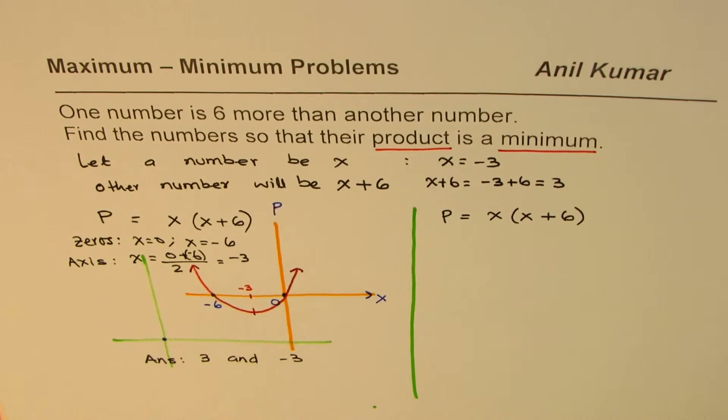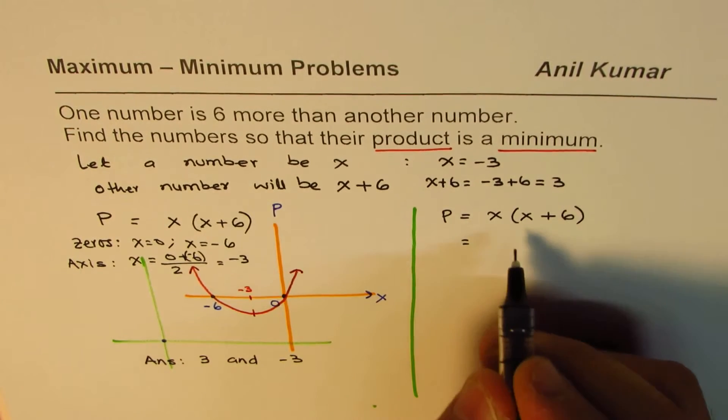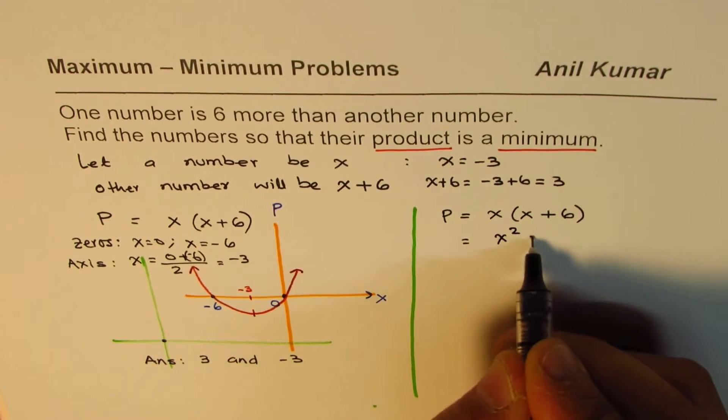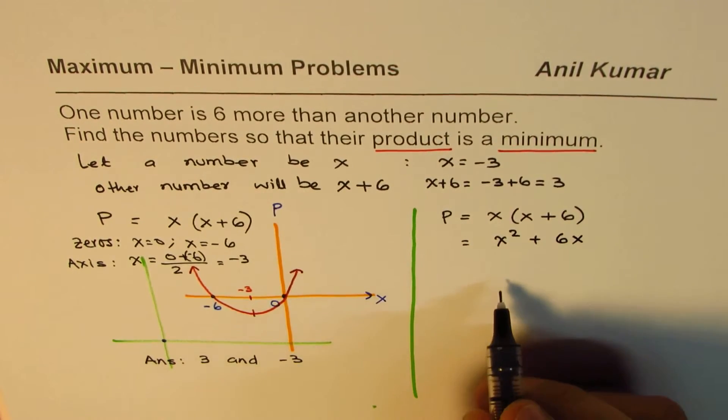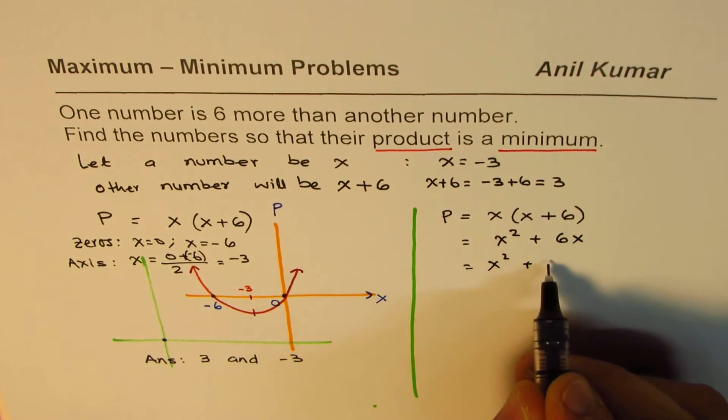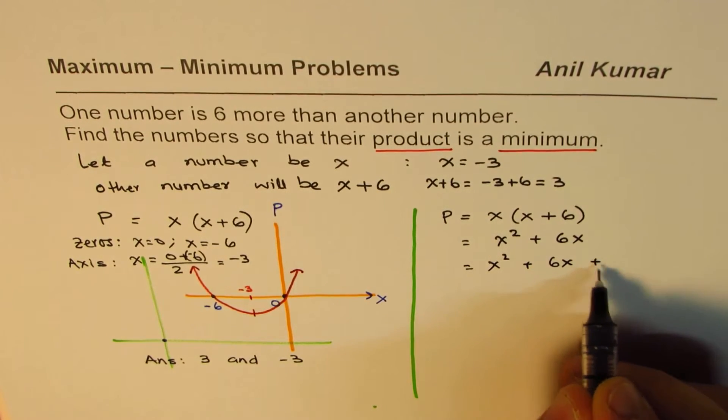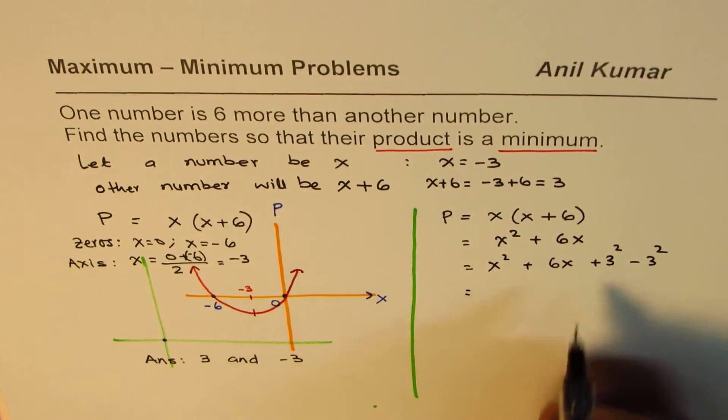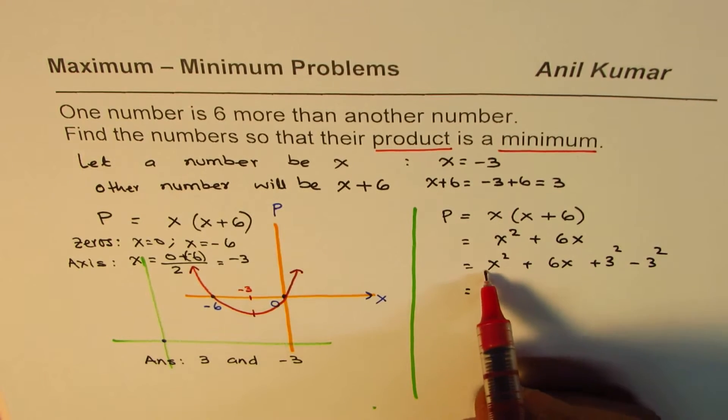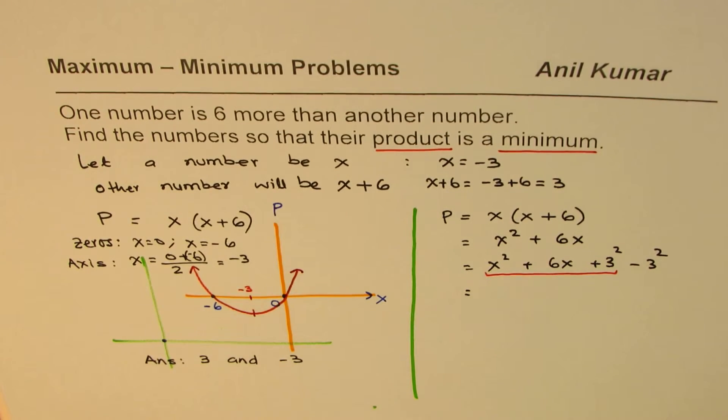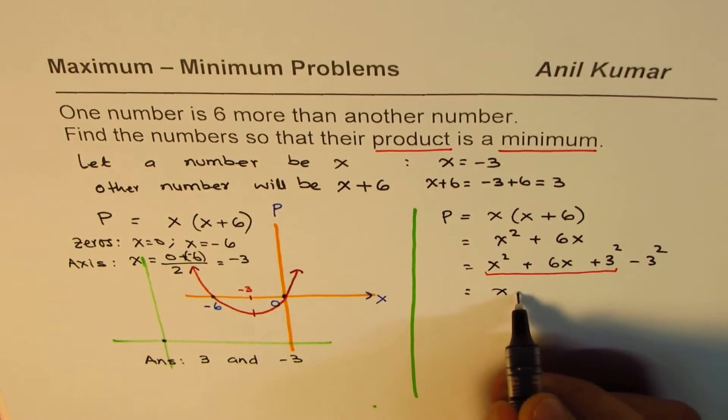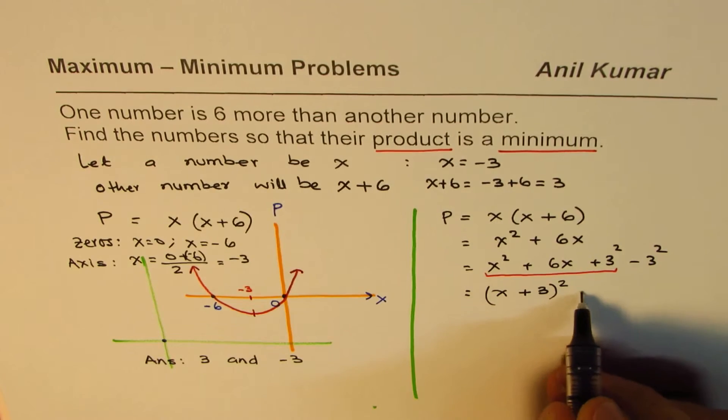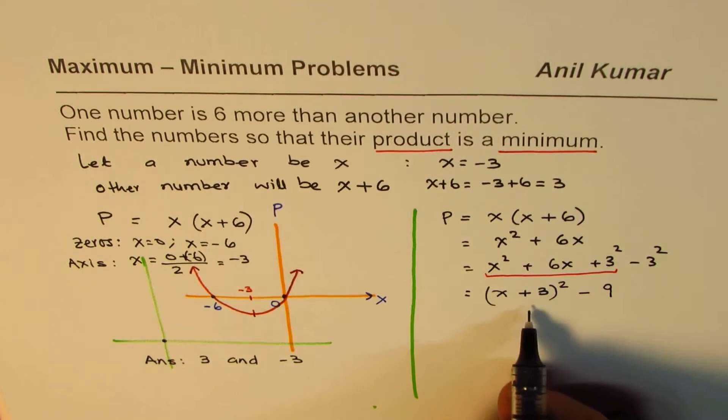Okay, now let's do the most popular method, which is full of calculations. Let's expand this first. We get X square plus six X. Now we will add and subtract half of this, which is three square, and subtract three square. Now these three terms form a perfect square. They could be written as X plus three whole square, these three terms, minus three square, which is nine.